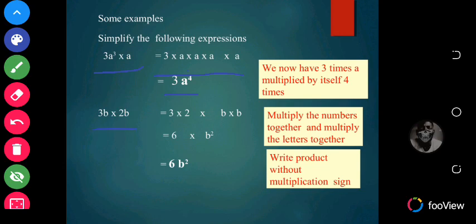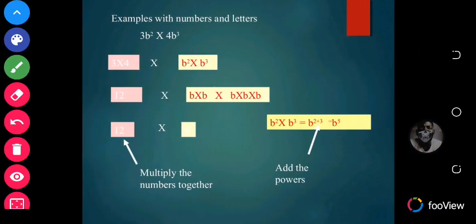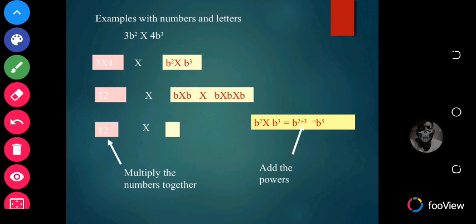Let's look at another expression: 3 times 2b times 2b. We group like terms — numbers together: 3 times 2 equals 6, and b times b equals b raised to the power 2 — so the answer is 6b squared. Next example: 3b raised to the power 2 times 4b raised to the power 3. Group the numbers: 3 times 4, and group the b terms: b squared times b cubed.